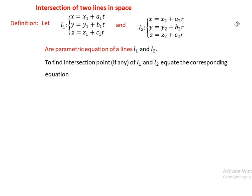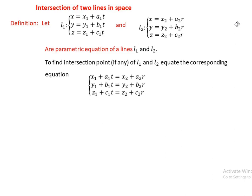To find the intersection point, we equate the corresponding parametric equations of L1 and L2: x1 plus a1*t equals x2 plus a2*r, y1 plus b1*t equals y2 plus b2*r, and z1 plus c1*t equals z2 plus c2*r.